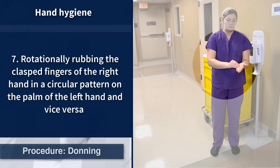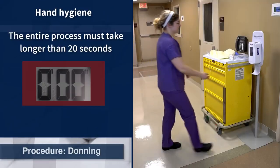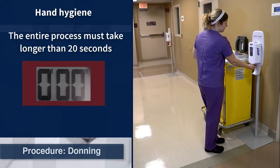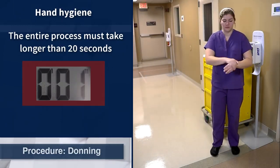Rub the clasped fingers of the right hand forward and backwards in a circular pattern on the palm of the left hand, and vice versa. Finally, rub both hands together with fingers closed until the sanitizer is dry. This process should take no less than 20 seconds to complete.